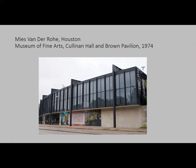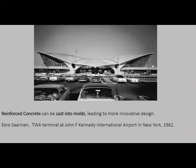There is an example of Mies van der Rohe's work in Houston — a building with few structural supports and lots of windows. If you've gone by the Museum of Fine Arts, the Cullinan Hall and Brown Pavilion at the front of the building were designed by Mies van der Rohe.